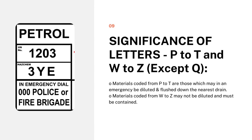The second part of the HAZCHEM code is a letter from P to T or W to Z, except Q. Materials coded from P to T may in an emergency be diluted and flushed down to the nearest drain. Materials coded from W to Z may not be diluted and must be contained. For example, in the code '3YE': 3 indicates foam extinguisher, Y indicates the material cannot be diluted and must be contained, and E indicates all persons other than fire brigade should evacuate to a minimum distance of 200 meters.